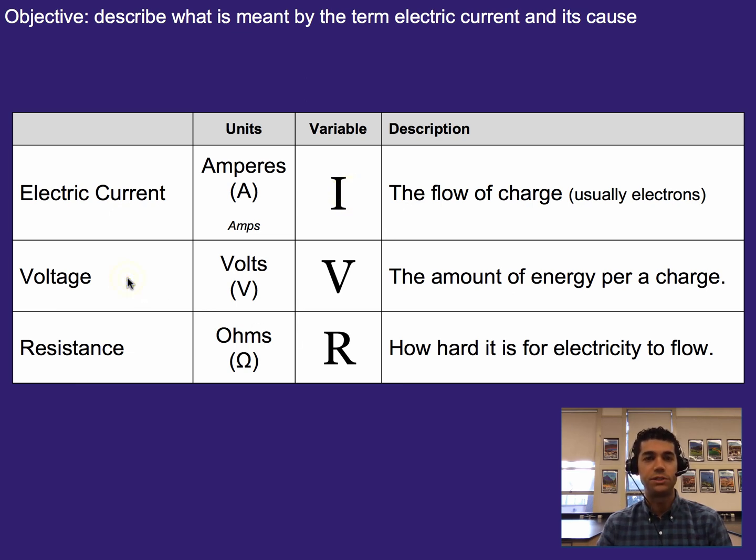The other thing we'll talk about is voltage, and you've heard that word before somewhere. Voltage is the amount of energy per charge. So if current is how fast the charge is flowing through, voltage is how much energy each of those electrons is carrying with it, or how much it can give to whatever device you're powering. The variable for voltage is V, and we measure it in volts.